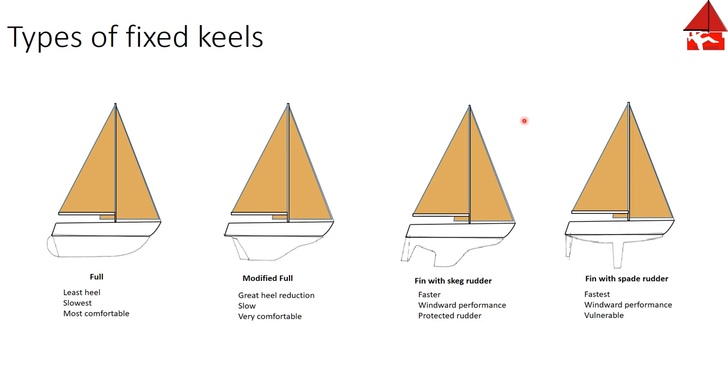Now that we've looked at the forces acting on the boat, we can talk about the types of keels and their advantages and disadvantages. A full keel extends the entire length of the hull. It has the largest amount of wetted area and is also the heaviest. It gives you the least amount of heel, the most drag and slower speed, and the most comfortable ride regardless of your wind or waves.